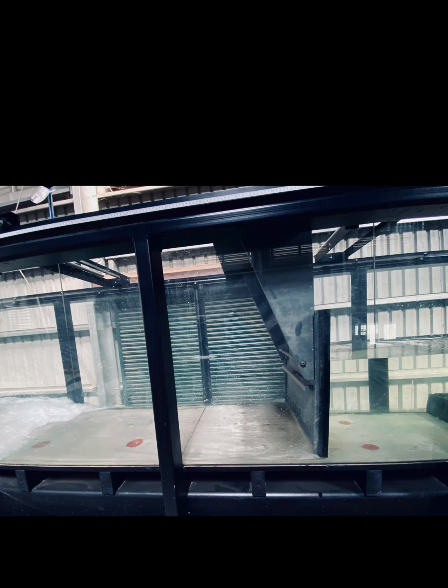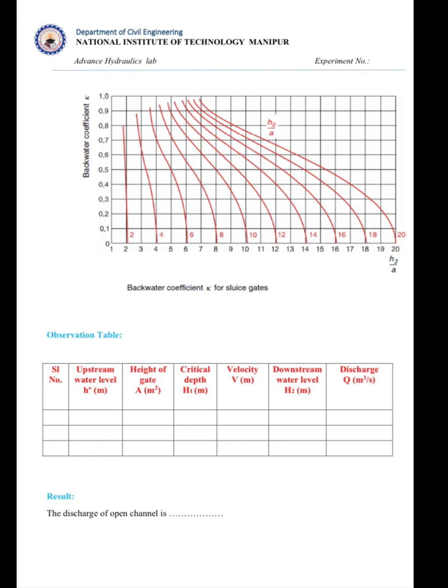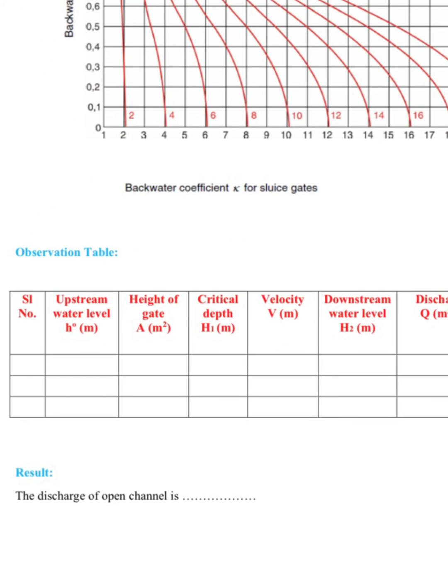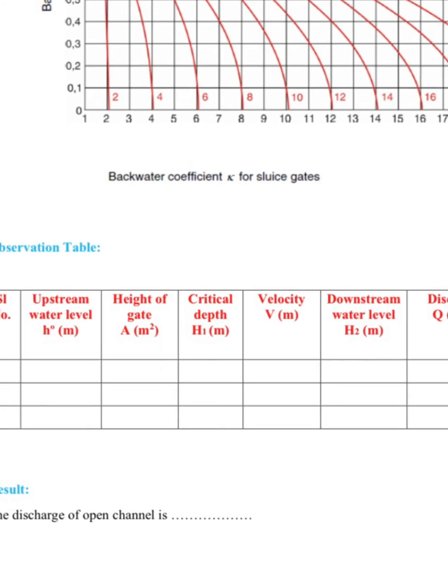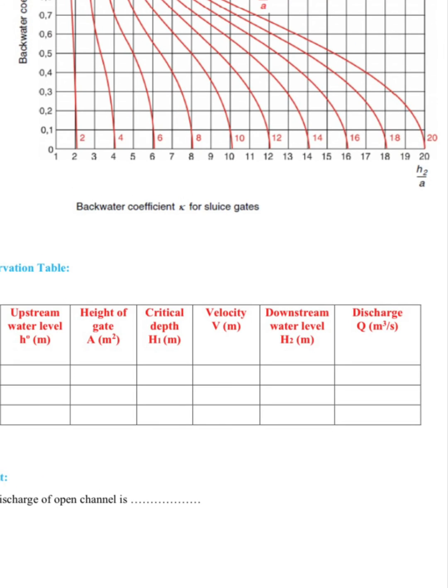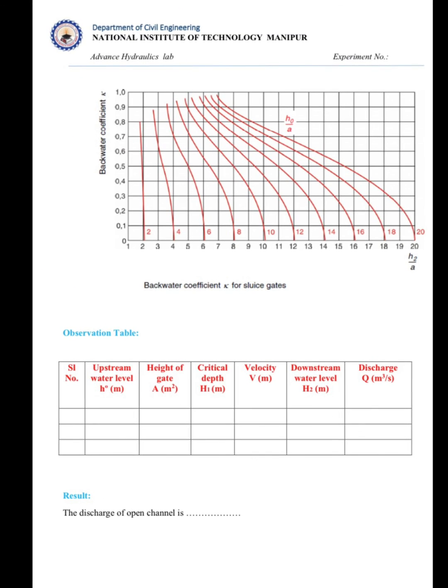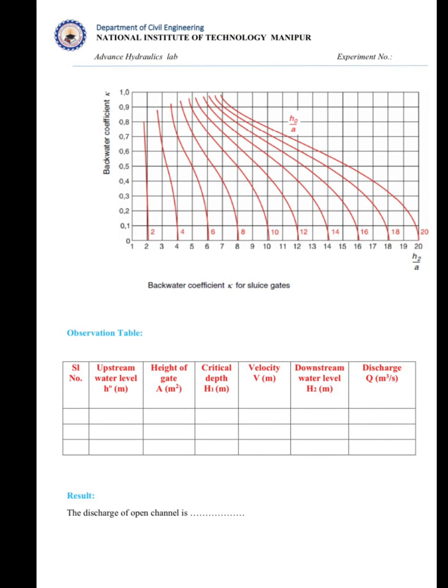After the measurements, we will note down the upstream head, height of gate opening, critical depth, velocity, and downstream water level. By using the formula given earlier, we can find the discharge, which is in cubic meters per second.